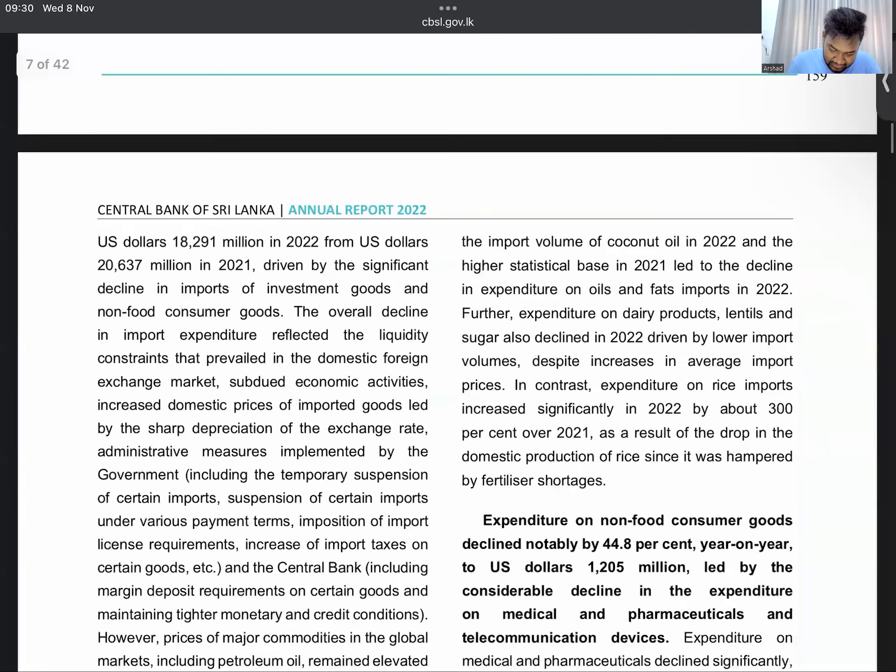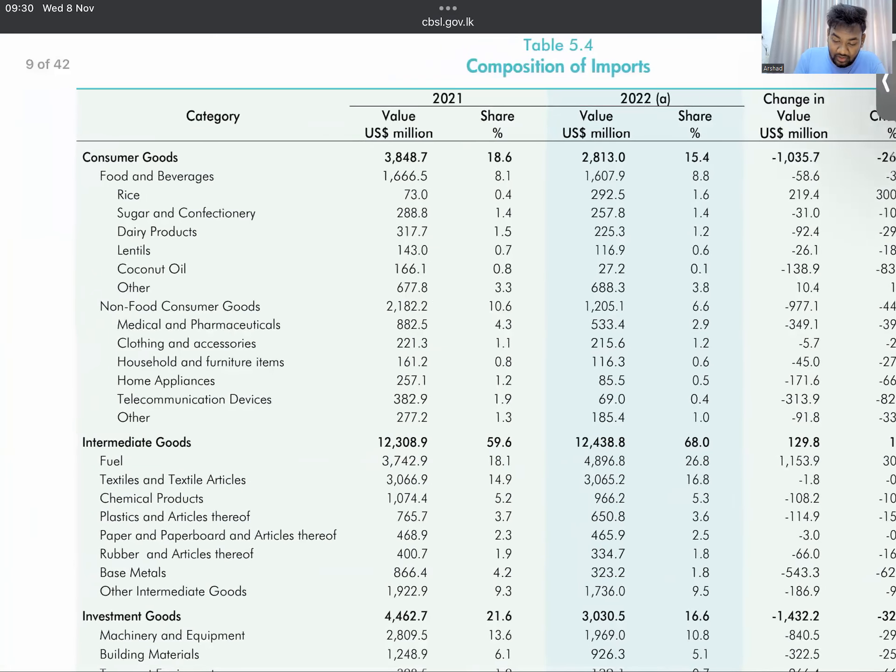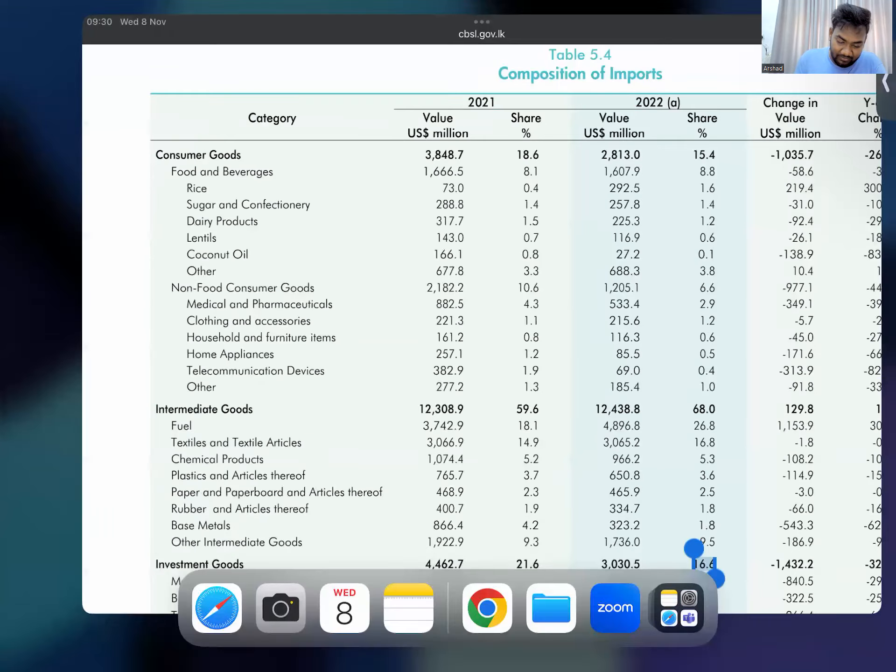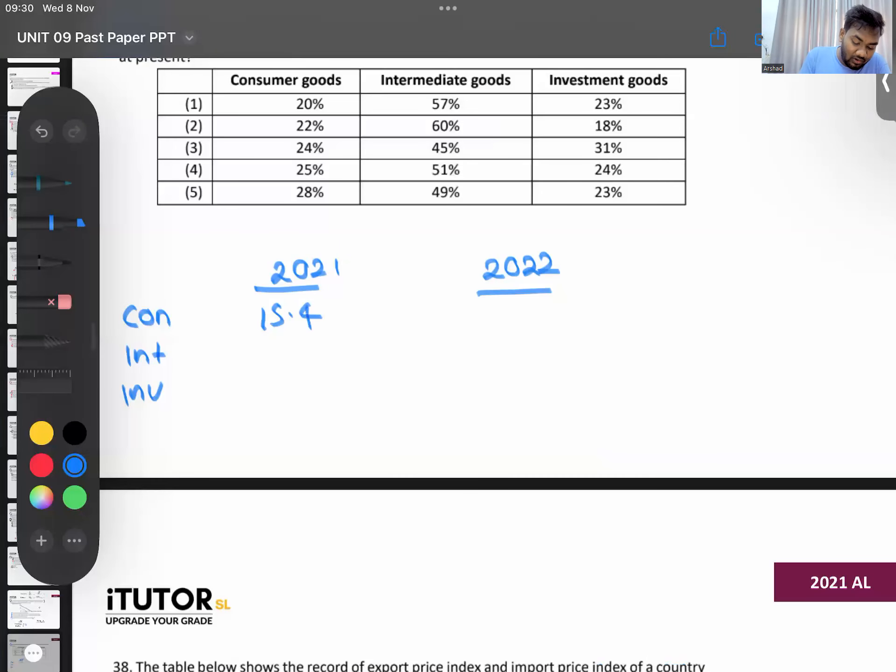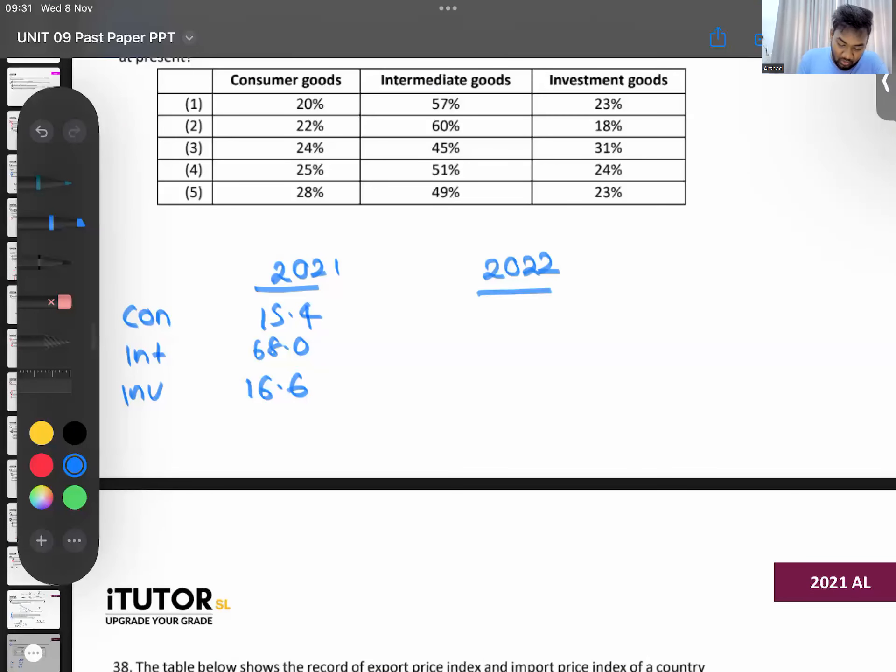Can you all take this level? Can you all write this down? Consumer goods 2022: 15.4%. Intermediate goods: 68%. Investment goods: 16.6%. 15.4, 68, 16.6. This is the composition. Out of this has to equal to 100, right? From your total exports, 15.4% are consumer goods, 68% are intermediate goods. Yeah sorry, this is 2022.